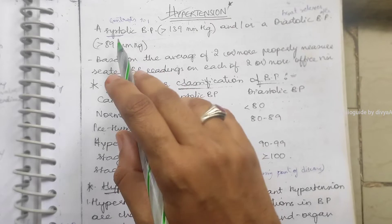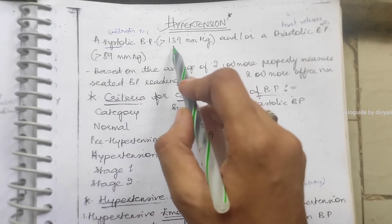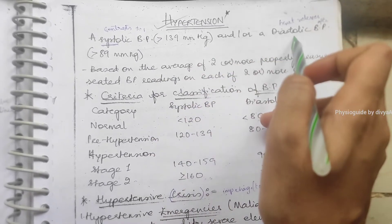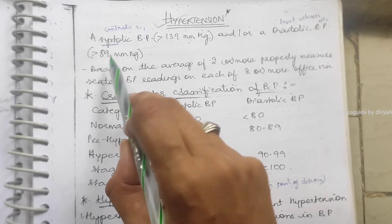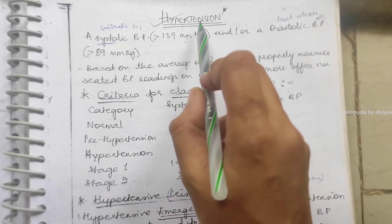When it is in contraction, the systolic BP if it is more than 139 mmHg, and diastolic BP when it is more than 89 mmHg, this condition is known as hypertension. Then we can say the patient has hypertension BP.